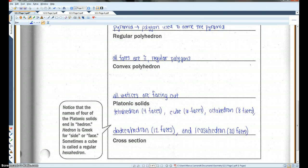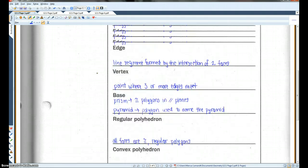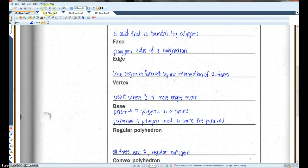A cross-section is the intersection of a plane and a particular solid. Again, feel free to pause or rewind if you need to go back and look at any of these vocab words. I'm going to go on to page two.